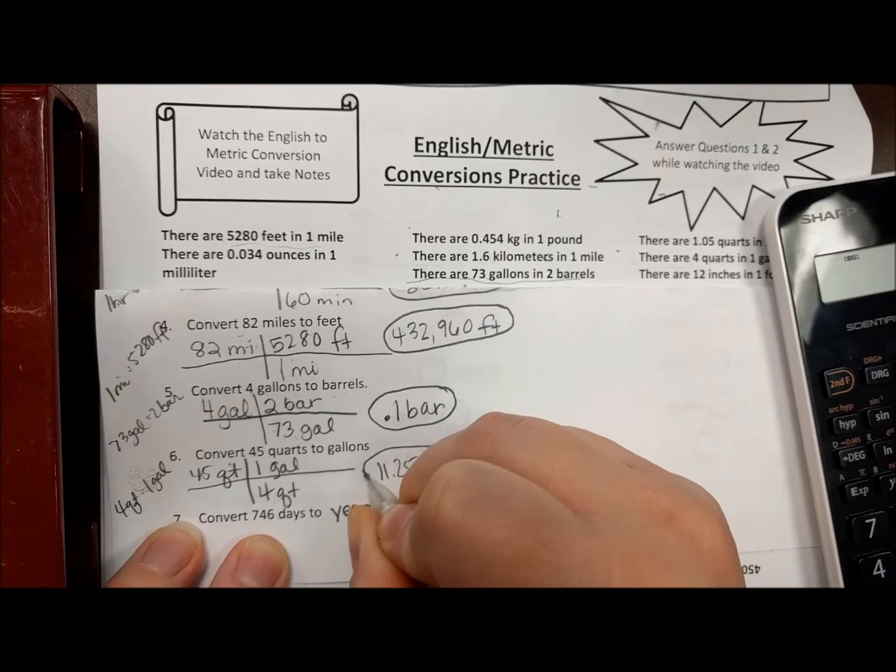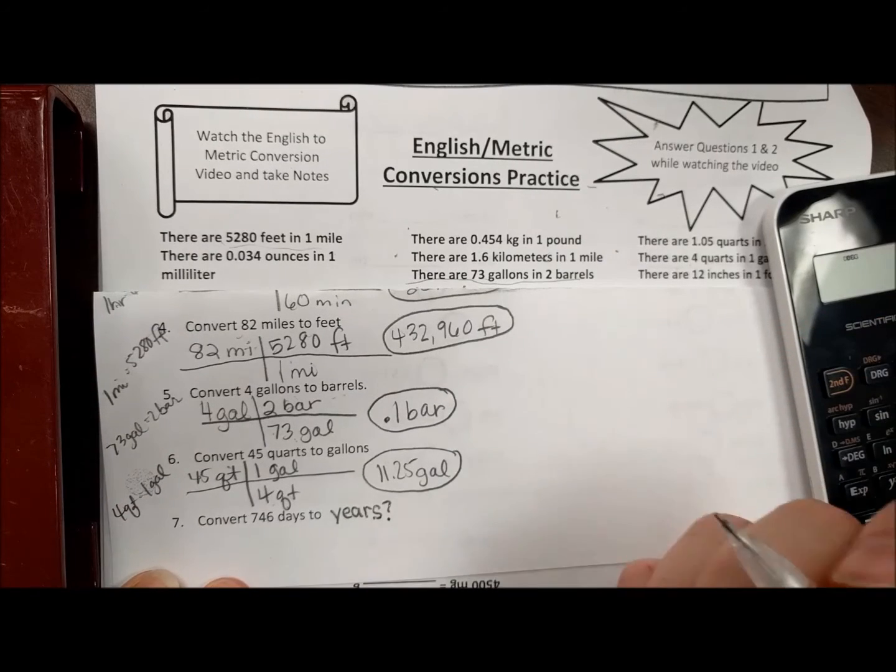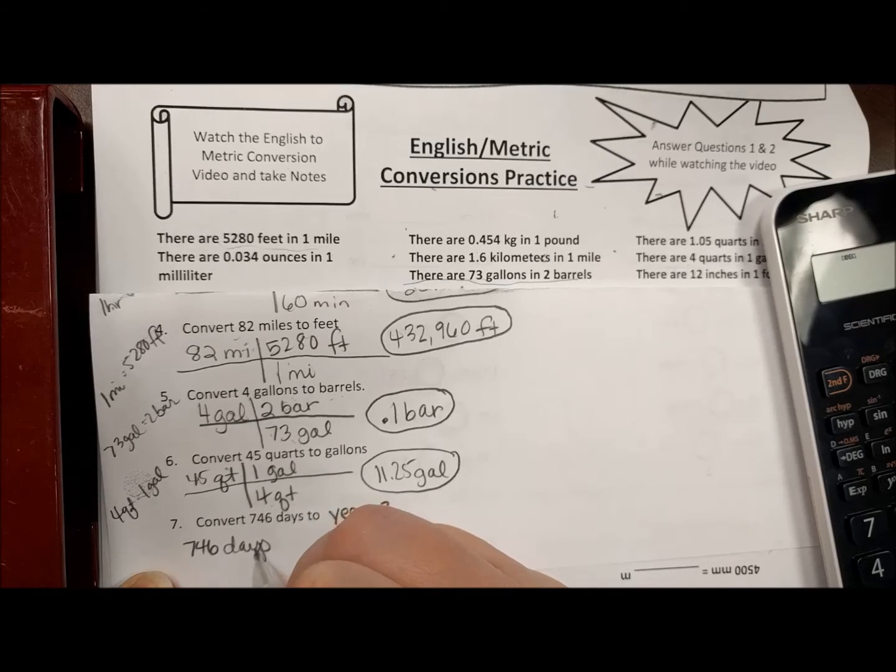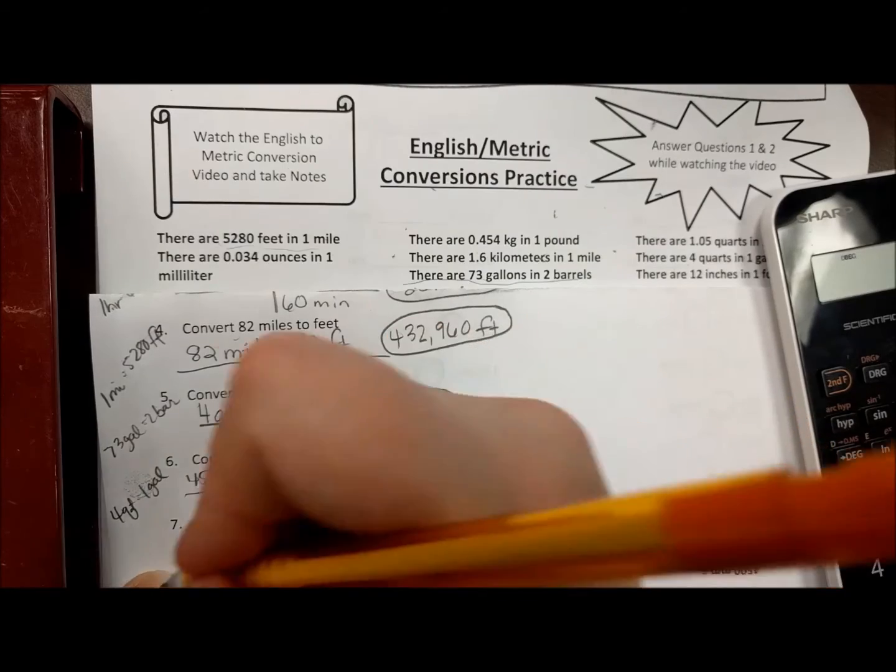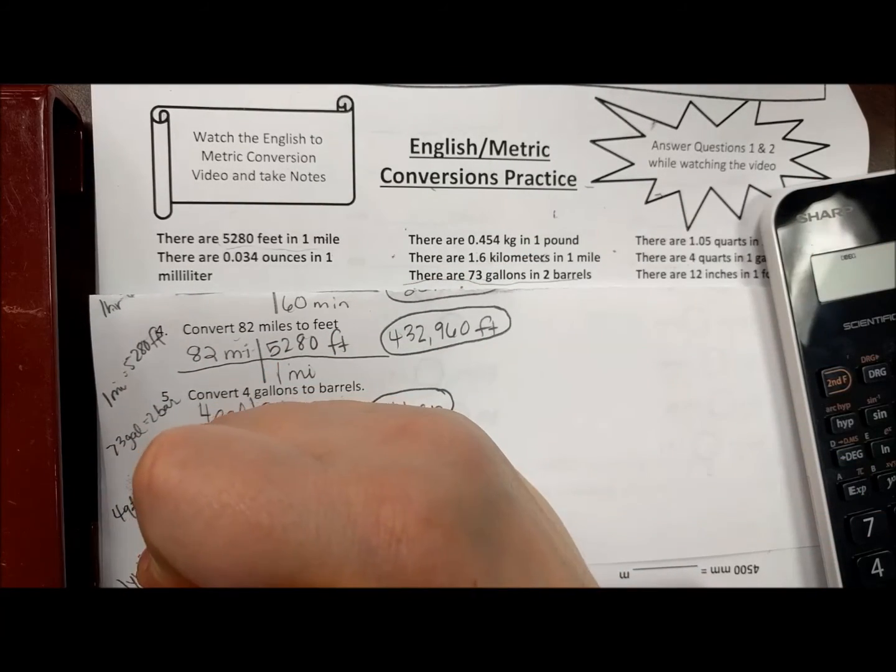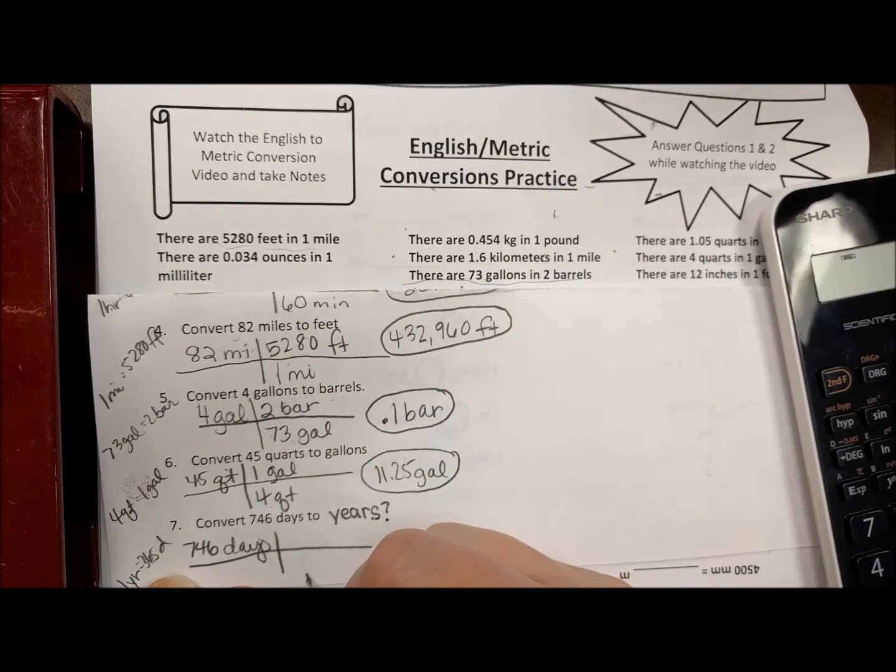Okay, so days to years: 746 days, how many years is that? Well, I know in one year there's 365 days, so the days have to match.